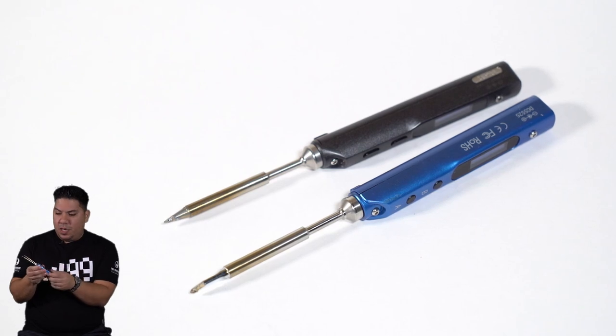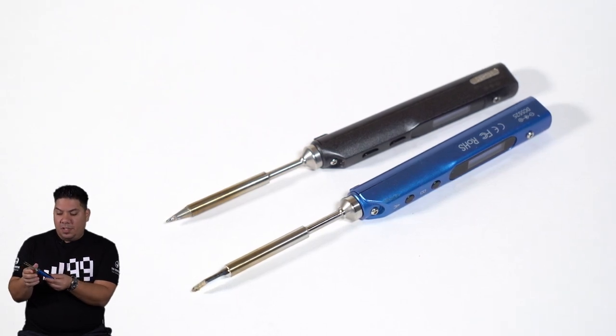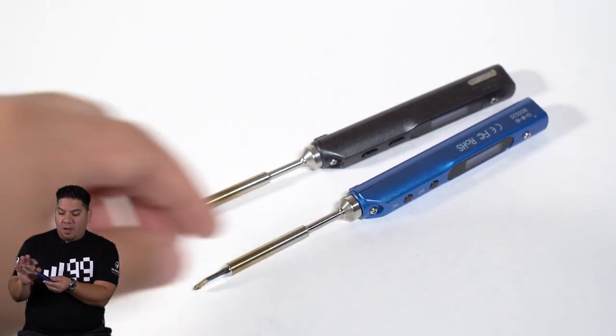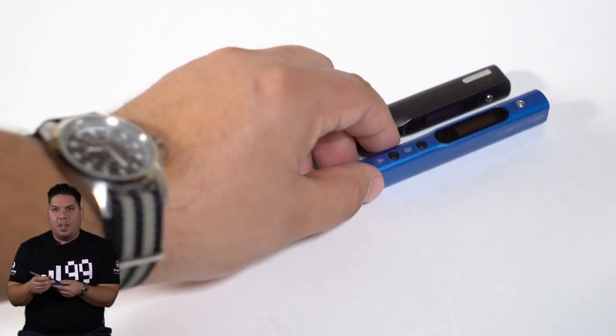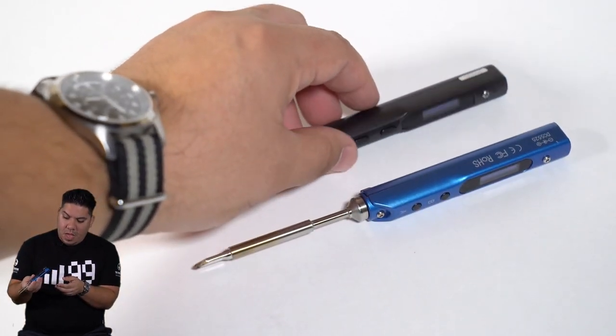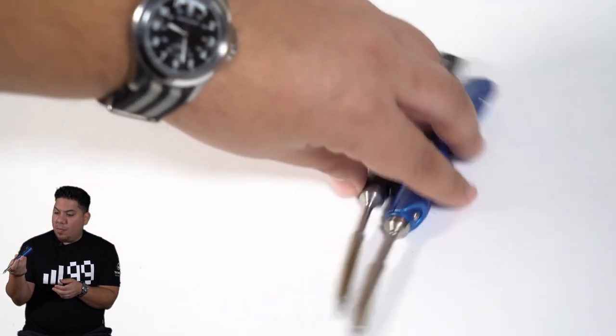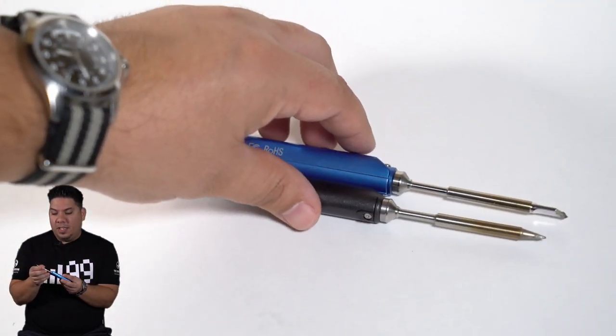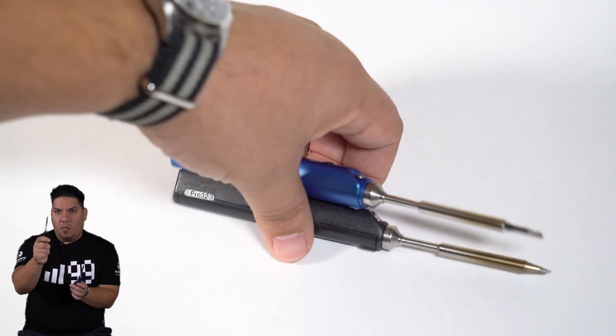But a couple of differences are the buttons are slightly different—they're round instead of oval shape. Whatever, that doesn't make a difference at all. They both have the micro USB on the bottom, but the cool thing is that this one, instead of with the small rounded tip, ships with this bladed tip.